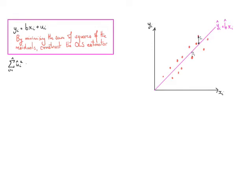We're going to minimize the sum of squares of these û hats, and the û hats are just the difference between the observed y and the fitted y. So the sum of squares of the residuals is just the sum of squares of yᵢ minus ŷᵢ, which is the same as the sum of squares of yᵢ minus b̂xᵢ. To minimize this, we differentiate the sum of squares of the residuals with respect to b̂, choosing the optimal b̂ which minimizes the sum of squares of residuals.